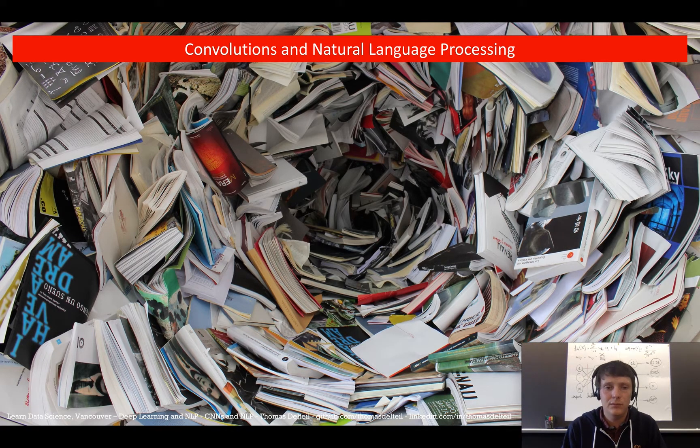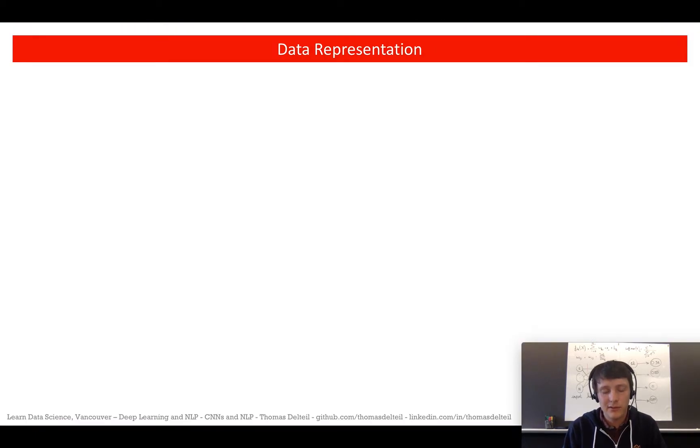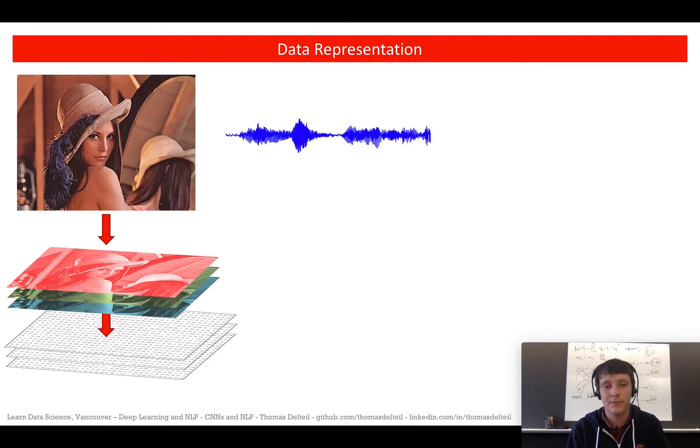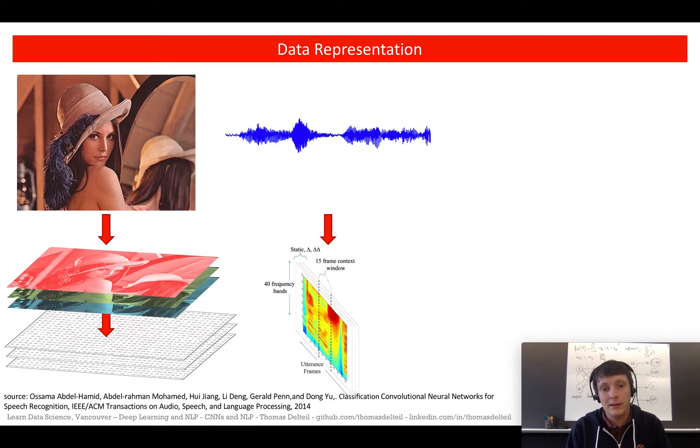So how do you apply convolutions to natural language processing? We have this problem of data representation because it was quite obvious for images. Images are composed of, for example, three channels. Each channel is composed of values, numbers between 0 and 255. And then you apply your convolution on this data. For speech you have different techniques. Actually you can work with a raw waveform which is very new and only been done in the last few years by DeepMind. Otherwise you can use a spectral representation. So you transform your temporal representation into the spectral representation and you use that as images.